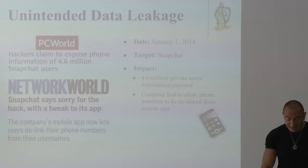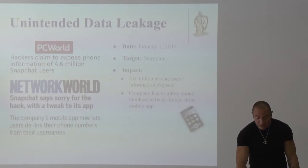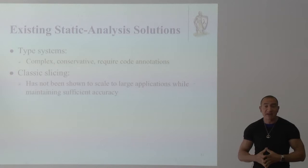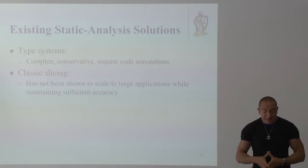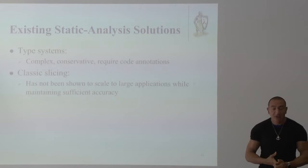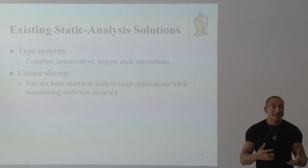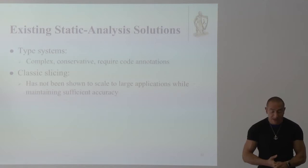Our approach has been to use program analysis to enforce information flow security. There are two major approaches: type systems and program slicing. Type systems are complex, conservative, and require code annotations, which becomes cumbersome especially when the code is not owned by a company — developers also need to understand security. This approach has not been very successful in industry. Classic slicing has the disadvantage of not being scalable if you want it to be very precise.